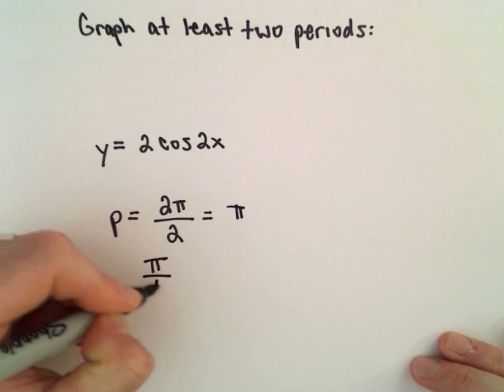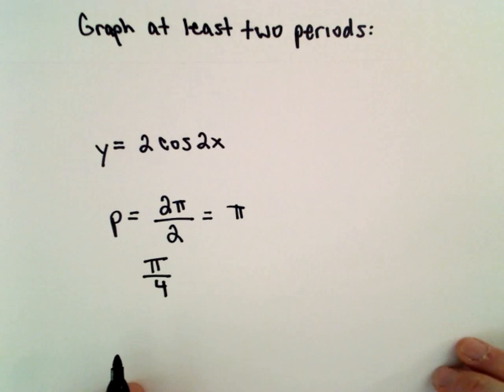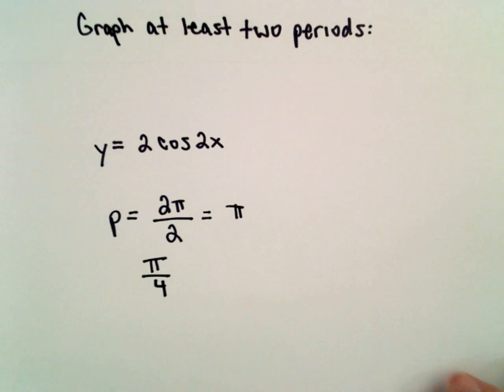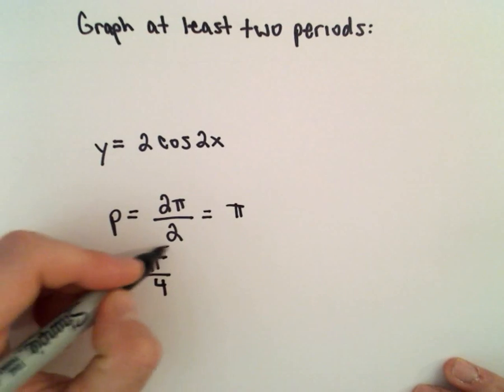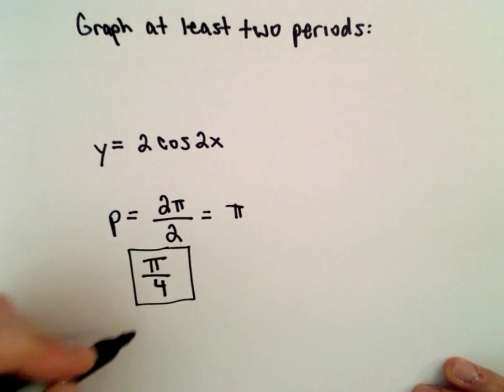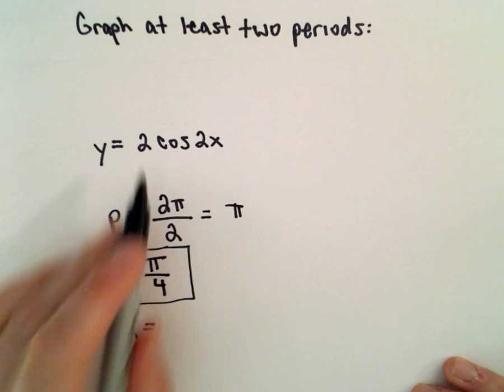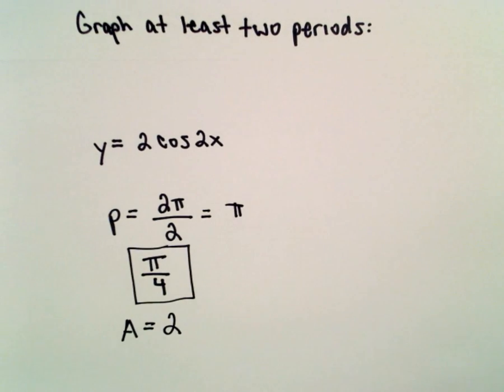I like to divide these into four equal pieces, and that's what I'm going to use as the increments on my graph. So I'm going to come back to that. I'll use those as the increments. The amplitude is just going to be the absolute value of 2, which is positive 2.